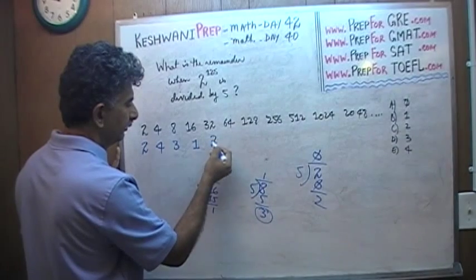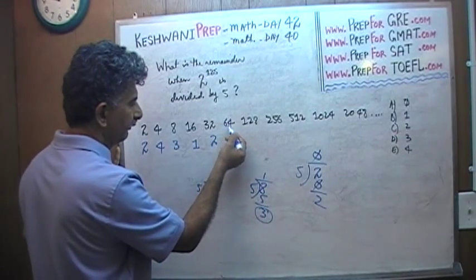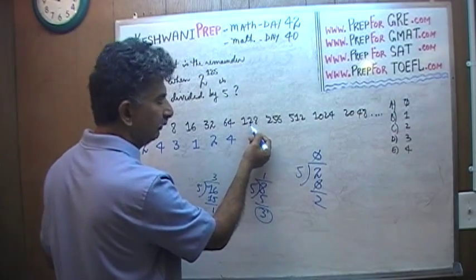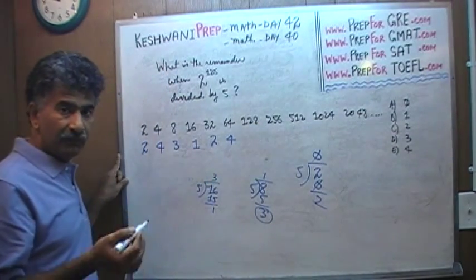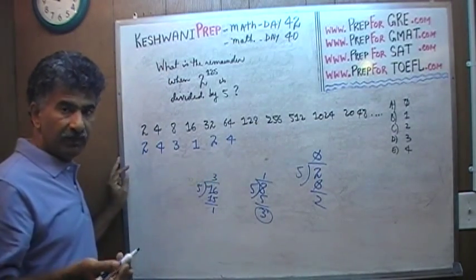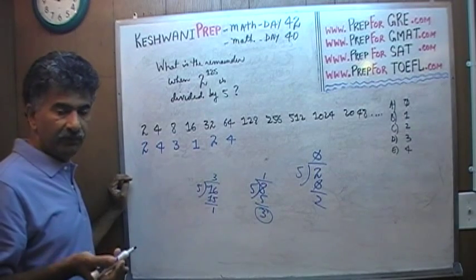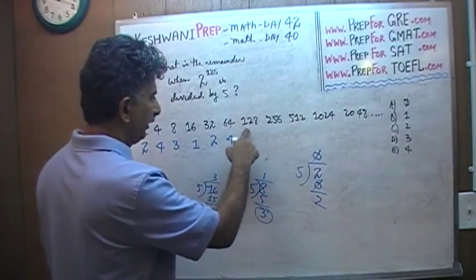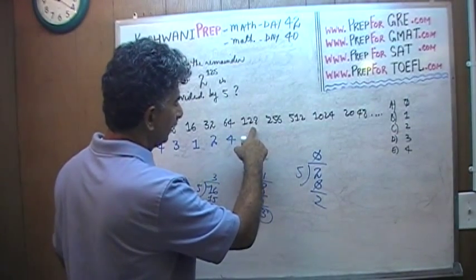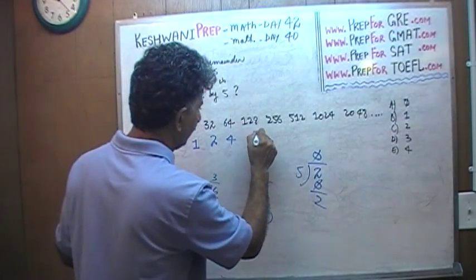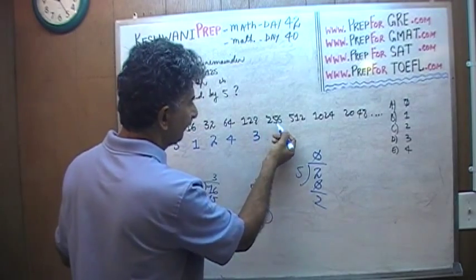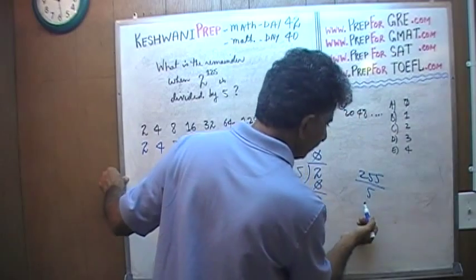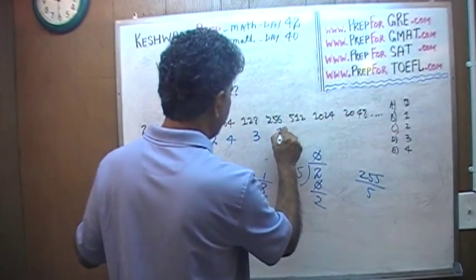For 32, the remainder is 2; for 64, the remainder is 4. Anything that ends in a 5 or a 0 is divisible by 5 — very simple. So 125 goes evenly into 5. For 128, the remainder is 3. 255 goes evenly into 5, so 256 has a remainder of 1.